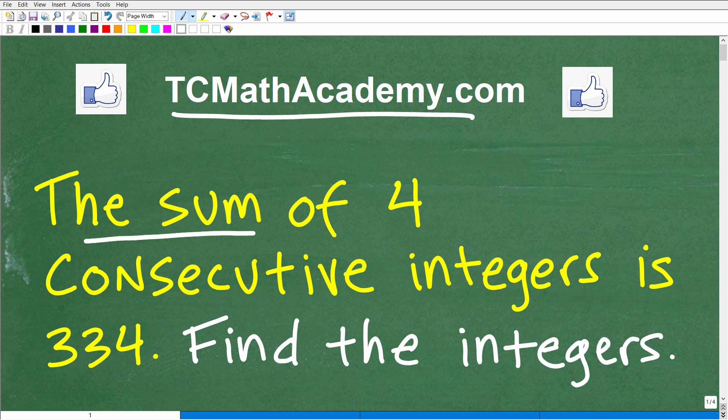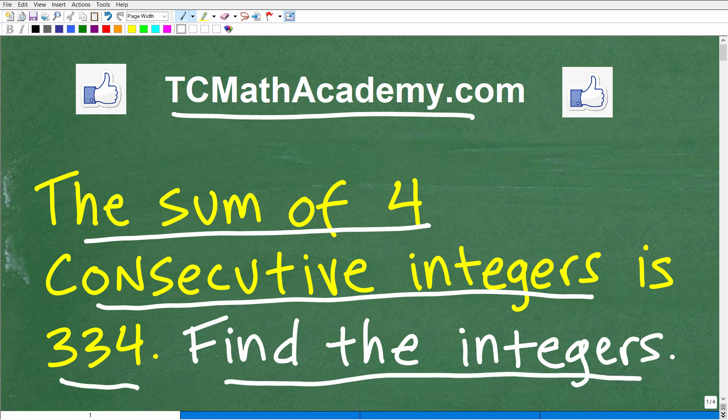It says the sum of four consecutive integers is 334. We want to find the integers, and this type of problem is a very common type of algebra word problem, so I'm giving you a little bit of a hint. You will need to use a little bit of algebra to figure this thing out.